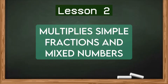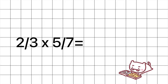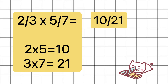In my previous lesson, you were able to add and subtract fractions and mixed numbers with or without regrouping. This time, you're going to learn how to multiply simple fractions and mixed numbers. Let's start with multiplying simple fractions. Multiply two-thirds times five-sevenths. To get the answer, just multiply both numerators and denominators. Two times five equals ten, three times seven equals twenty-one. So, two-thirds times five-sevenths equals ten over twenty-one.